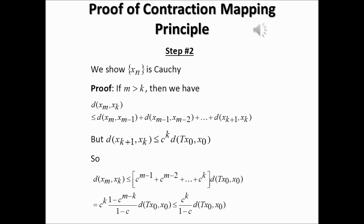If you factor c to the power k out, you have c to the power k times the sum 1 plus c plus c squared, up to c to the power n minus 1 minus k, times the distance between T(x_0) and x_0. Applying the geometric sum formula, this becomes c to the power k times (1 minus c to the power n minus k) over (1 minus c), times the distance between T(x_0) and x_0. Because c is between 0 and 1, this means the distance between the n-th and k-th terms is less than or equal to c to the power k over (1 minus c) times the distance between T(x_0) and x_0.